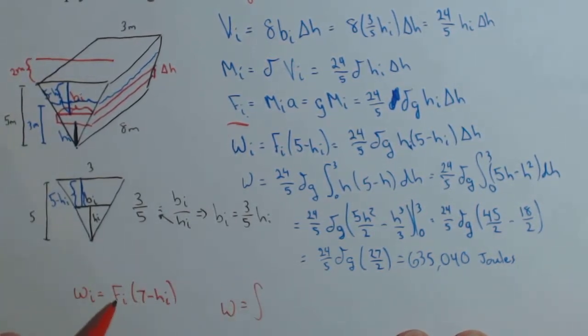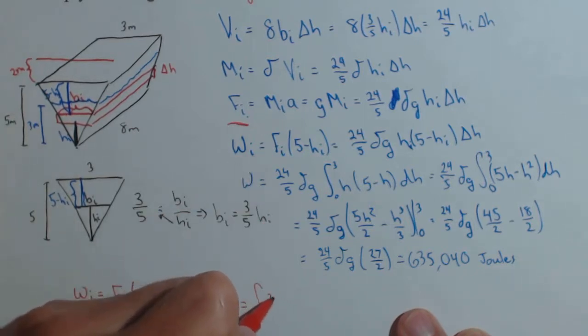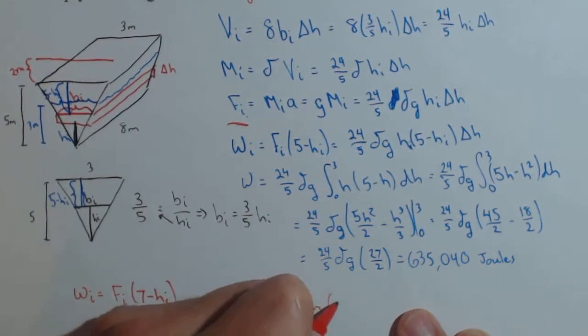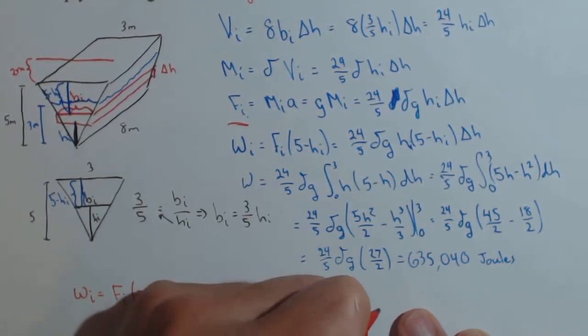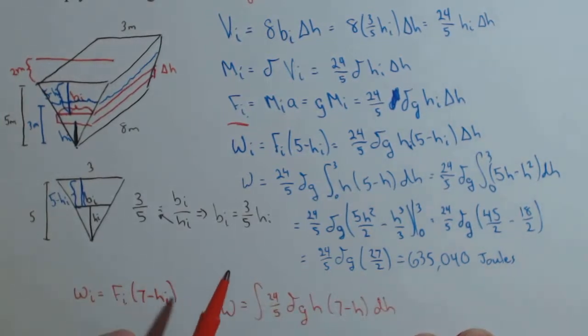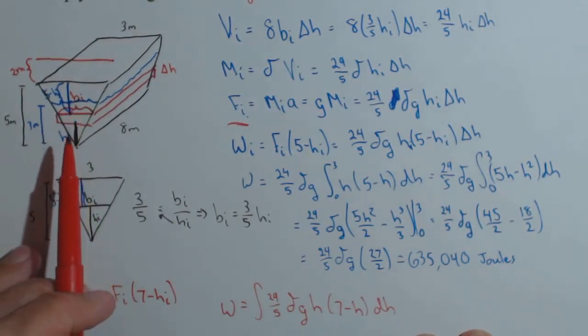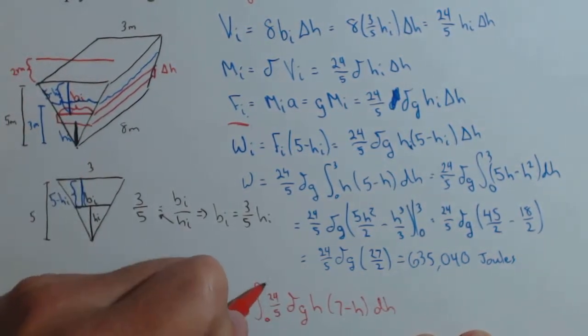So when we go to set up the integral for this one, it's going to be almost identical to what we had before. It's going to be the force on the i-th slice, which was 24 fifths delta g h. Now it's going to be 7 minus h dh. And lastly, our limits aren't going to change because the water hasn't changed. So it's still going to be 0 to 3.